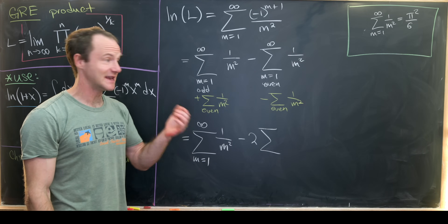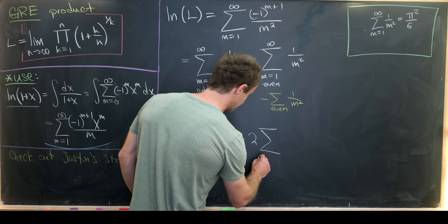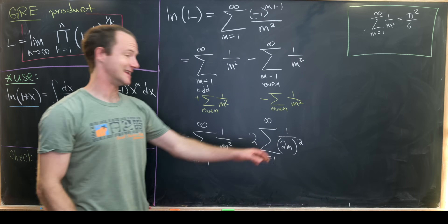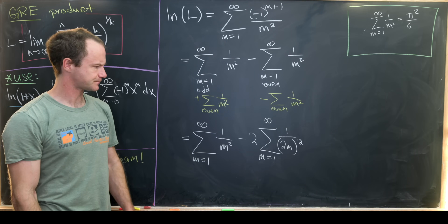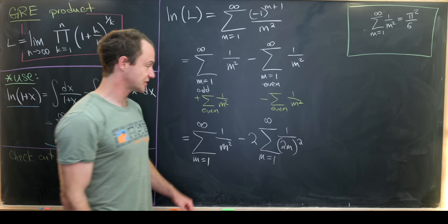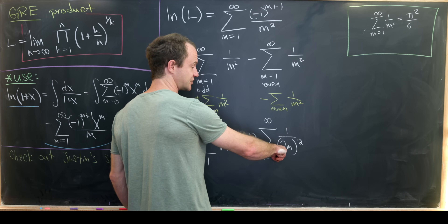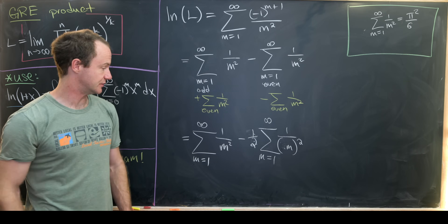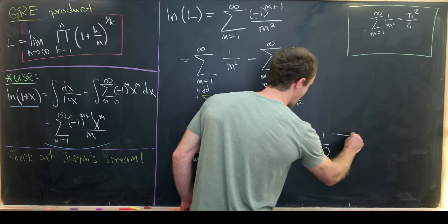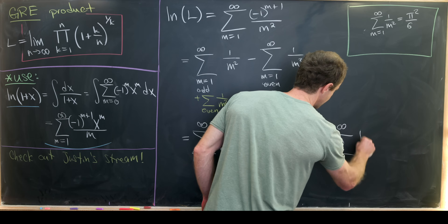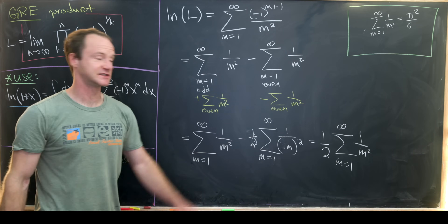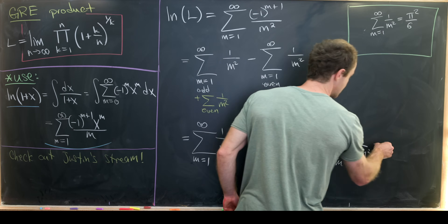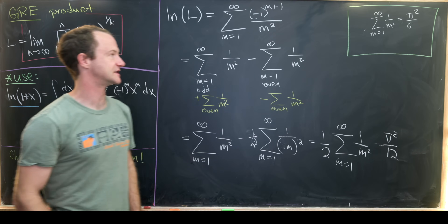By index-changing, summing over all even numbers becomes the sum from m=1 to infinity of 1/(2m)². The factor of 2 squares to 4 in the denominator, giving a factor of 1/2 out front when it cancels with the 2 outside. So in the end we have (1/2) times the sum from m=1 to infinity of 1/m². By the Basel result this equals π²/12, since it's half of π²/6.